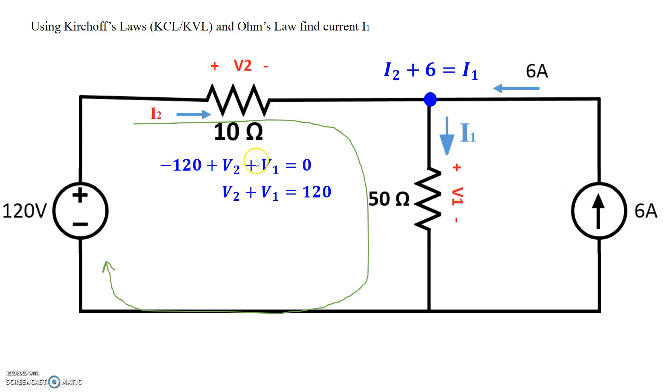So right here, V2 is I2 times the resistance 10. So let's replace V2 with 10I2, and V1 with I1 times 50. So I2 times 10 plus I1 times 50 equals 120.